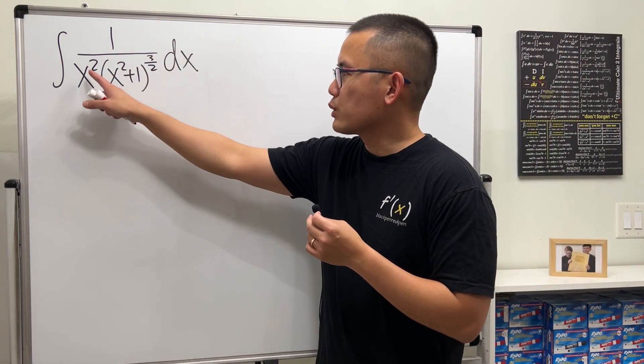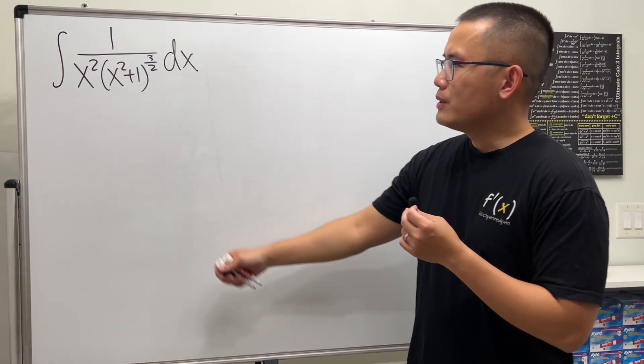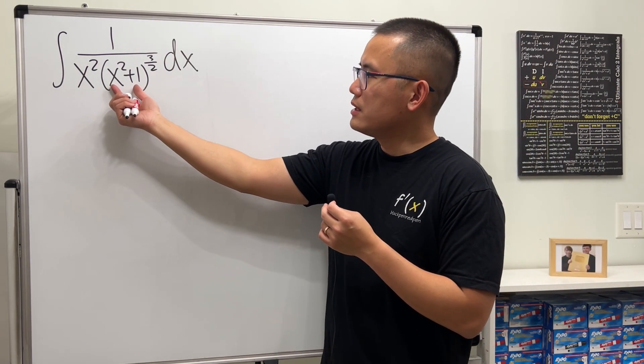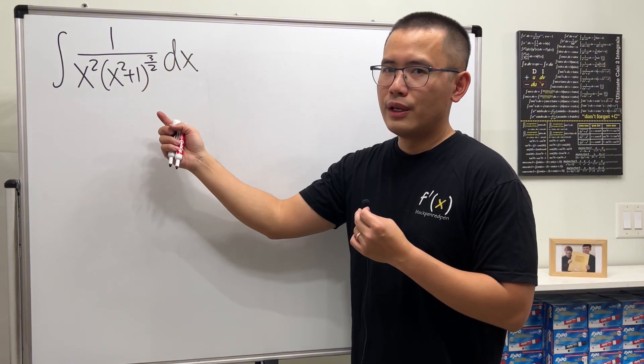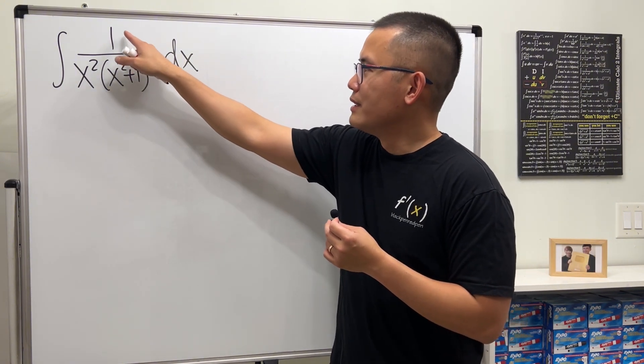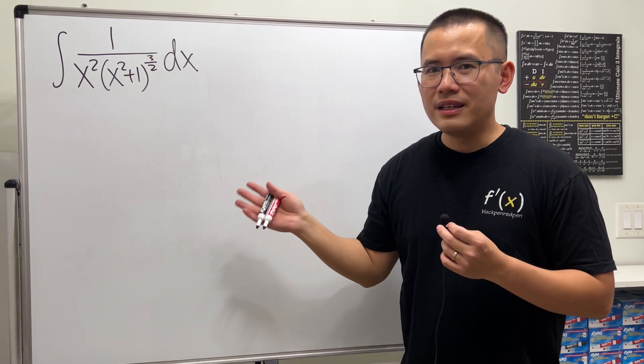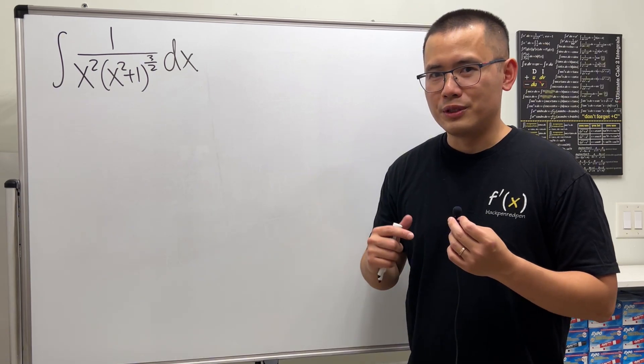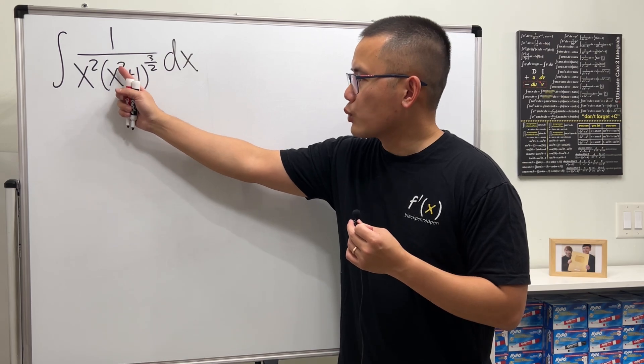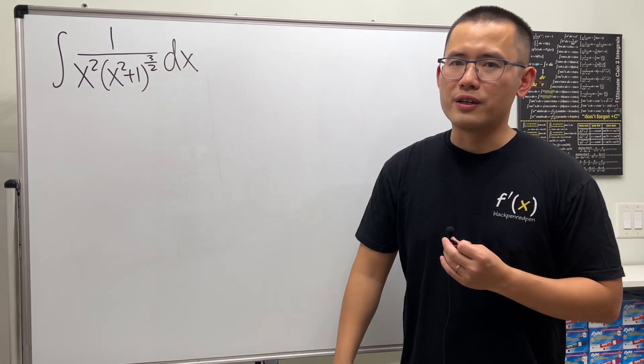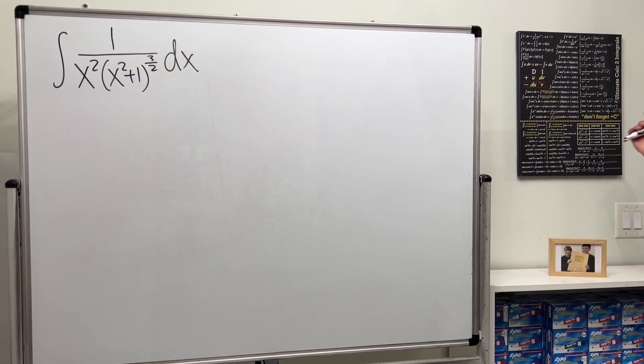Here we are going to integrate 1 over x squared times (x squared plus 1) raised to the 3/2 power. The hint here is that inside we have x squared plus 1, and also the power here is 3 over 2, and on the top here is just 1. This is a standard problem to use trig substitution. Now we have to think about what trig function squared plus 1 will give us another trig function squared.